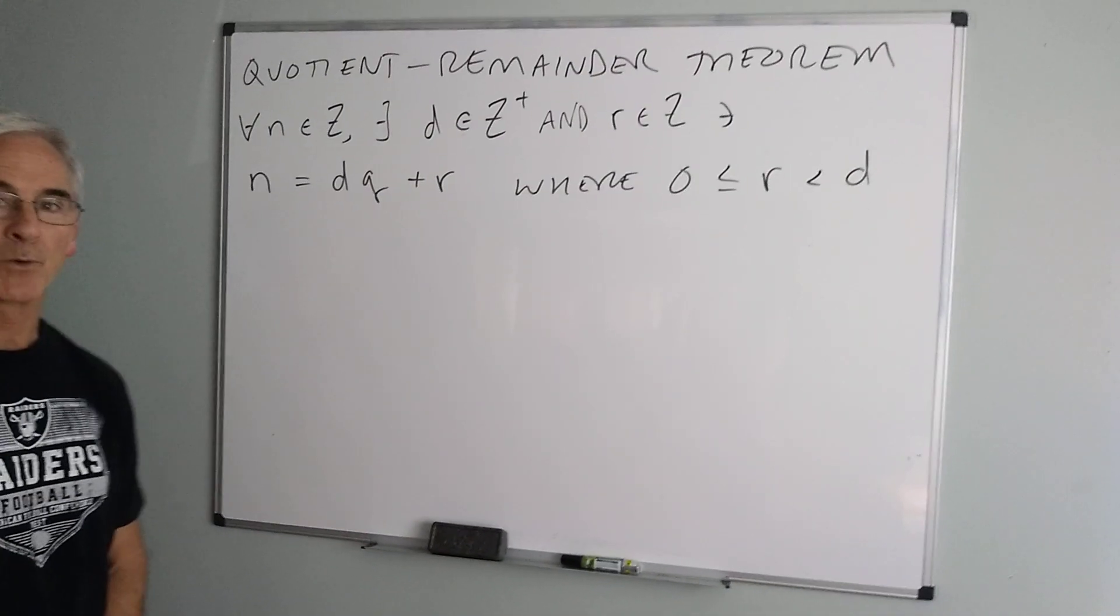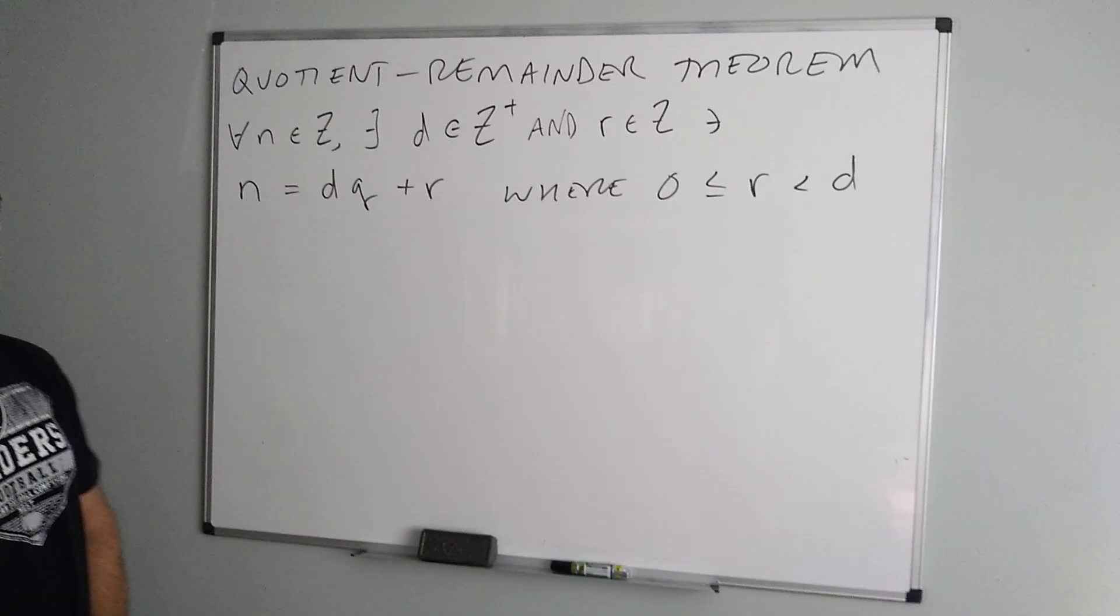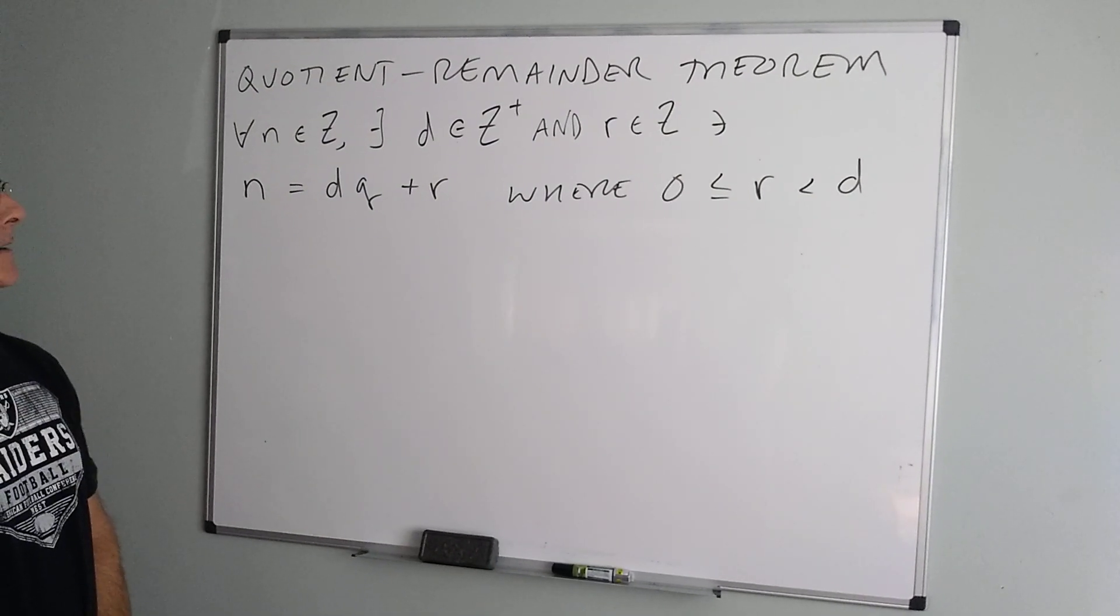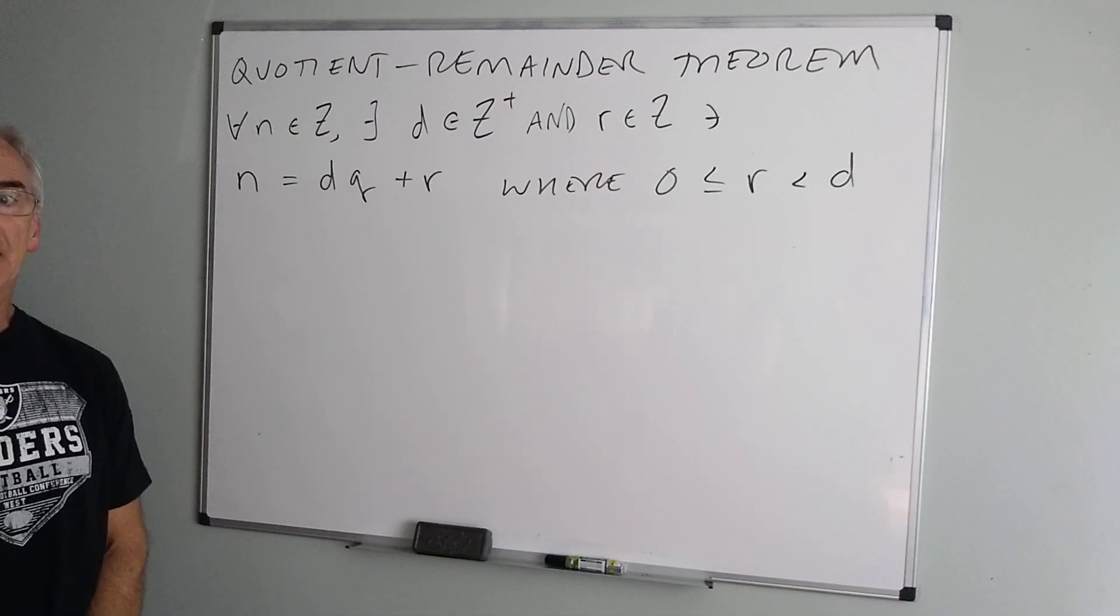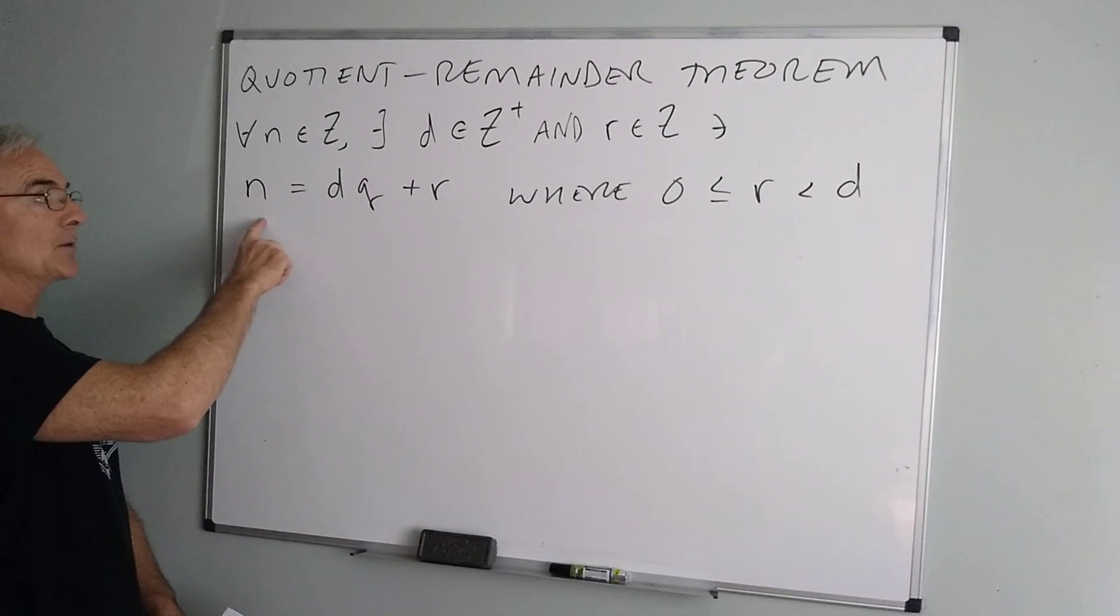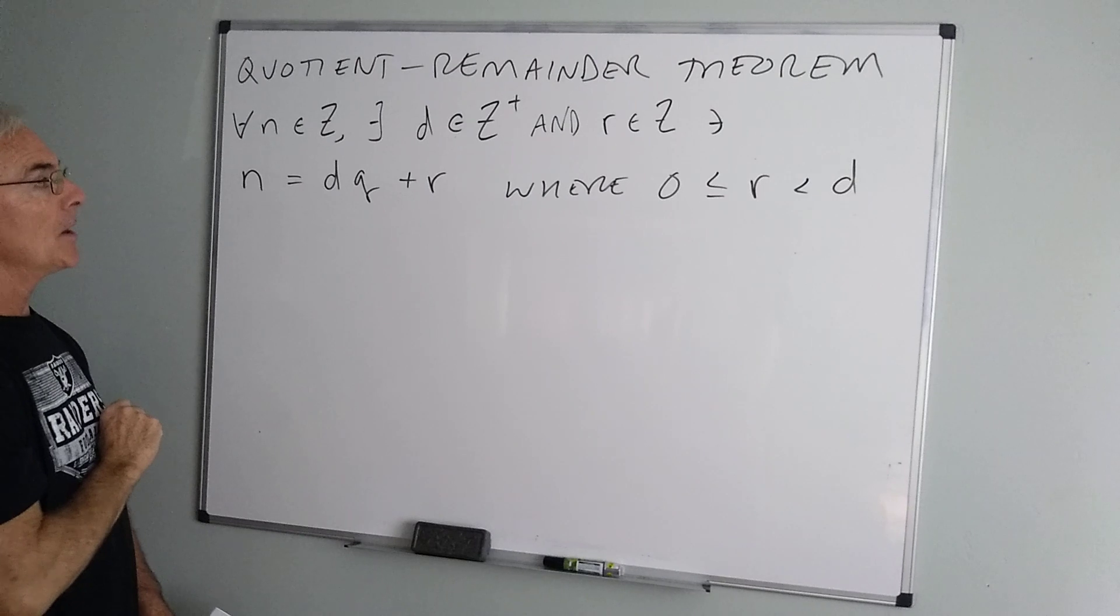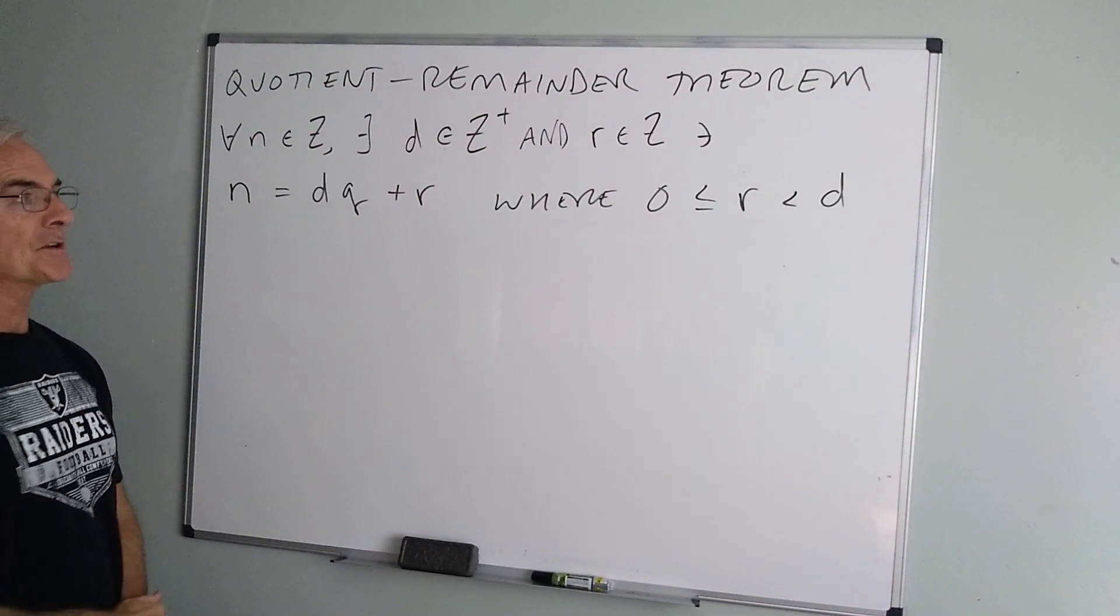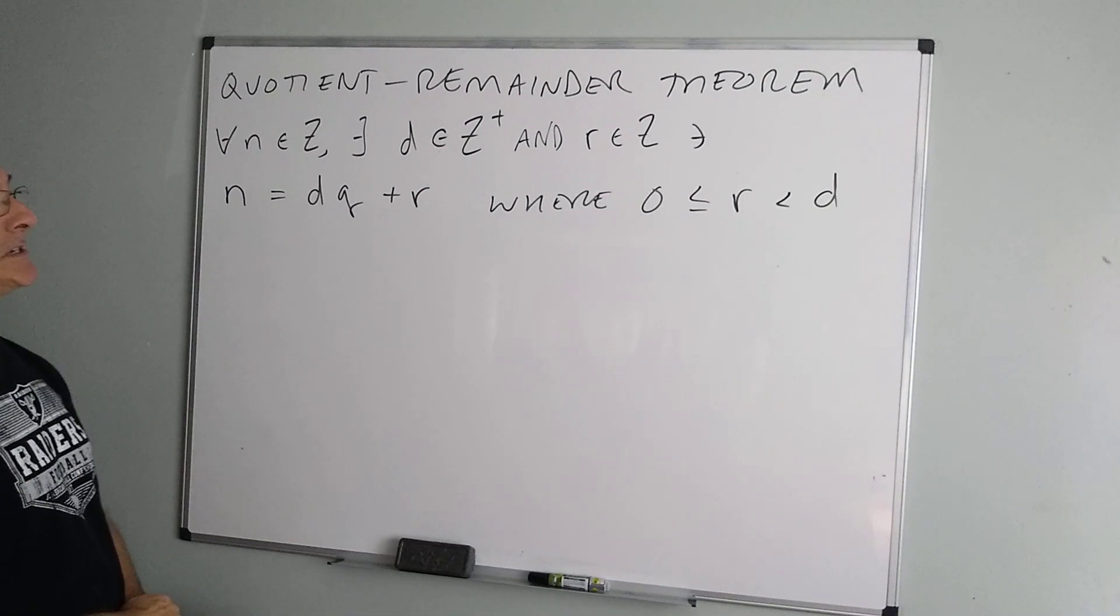Hello everyone. I hope you're doing well. I want to go over the quotient remainder theorem which basically says every integer can be written as a sum and product of other integers in the form n equals d times q plus r, where d is my denominator, q is my quotient, and r is my remainder, where r is a number between 0 and d.